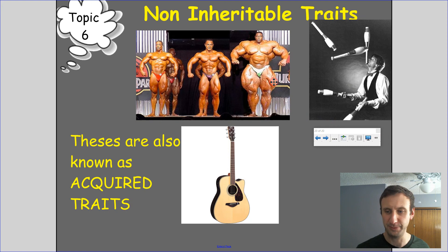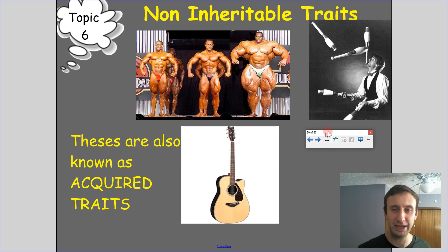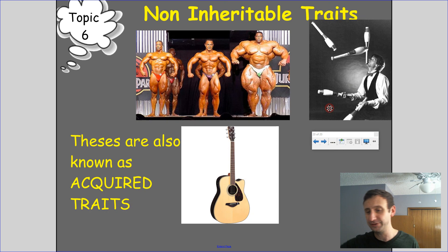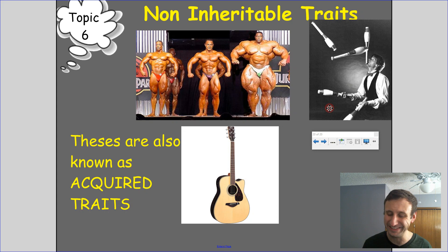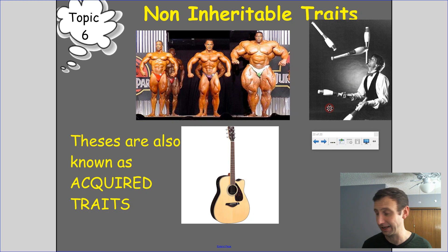That's an acquired trait. If he had babies, they would not be incredibly large and muscular, because that is an acquired trait. The same with skills like juggling or playing guitar — those are acquired traits, things you are not born with, not inherited. When we talk about natural selection, we are talking about inherited traits — things in your genetic code that can be passed on to offspring.